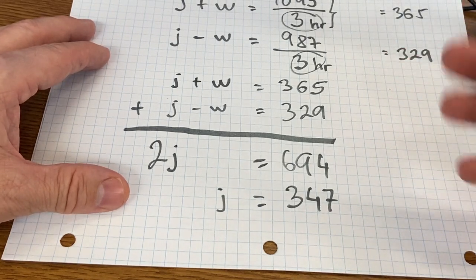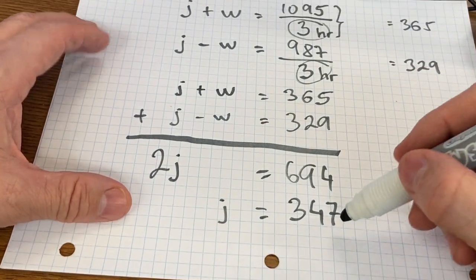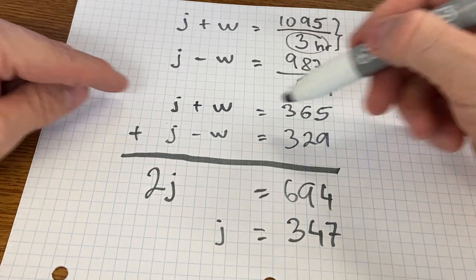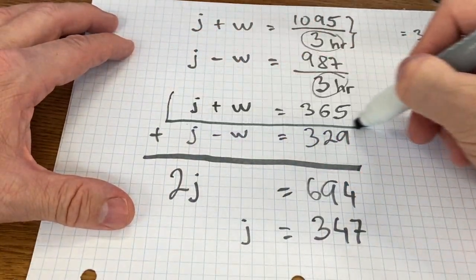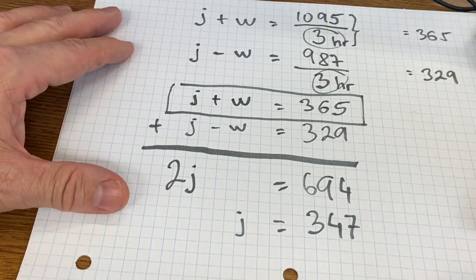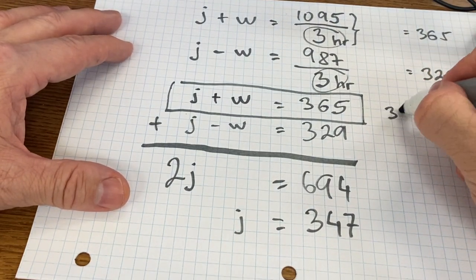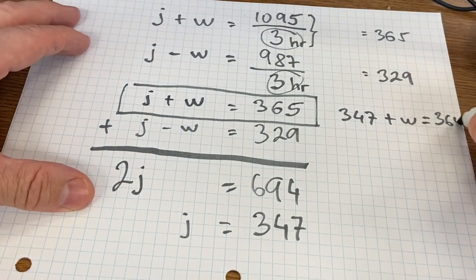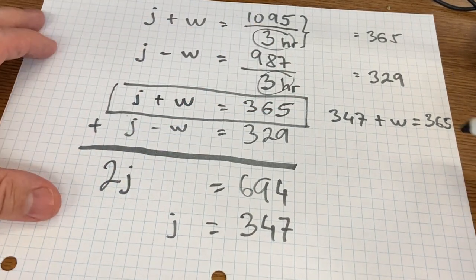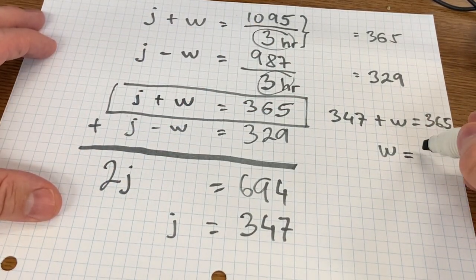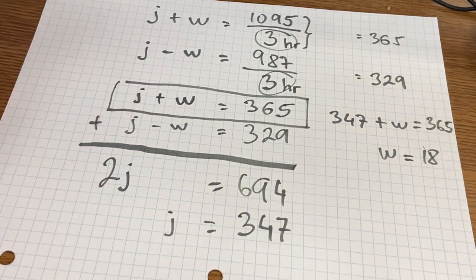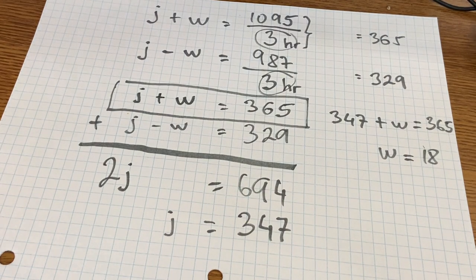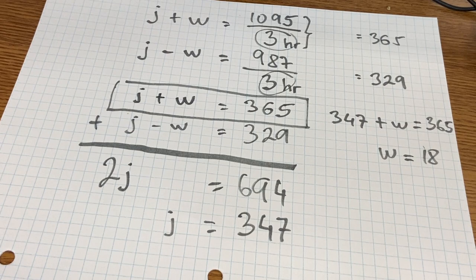If we then plug in this 347 number into one of the equations, such as the line of this one, and solve it for W, then this is how it looks like: 347 plus the unknown wind equals 365. Subtracting 347 from both sides of the equation will give us the wind speed of 18 units there.